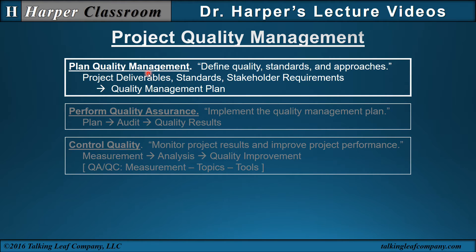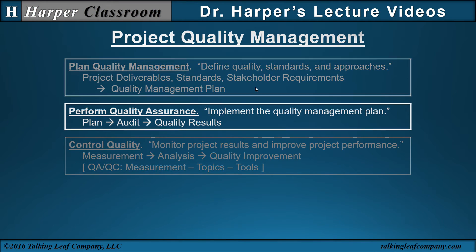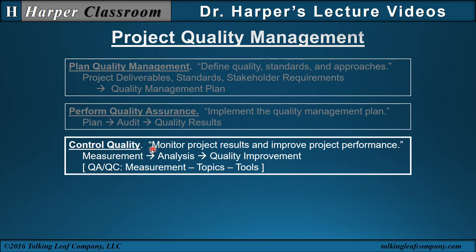The first process is plan quality management: define quality, standards, and approaches. We take project deliverables, standards, and stakeholder requirements to create a quality management plan. Next, perform quality assurance — implement the quality management plan — where assurance includes auditing and assuring quality results. Quality control: monitor project results and improve project performance through measurement analysis and quality improvement. In QA and QC, we will look at a number of measurement tools and techniques applied to project quality.